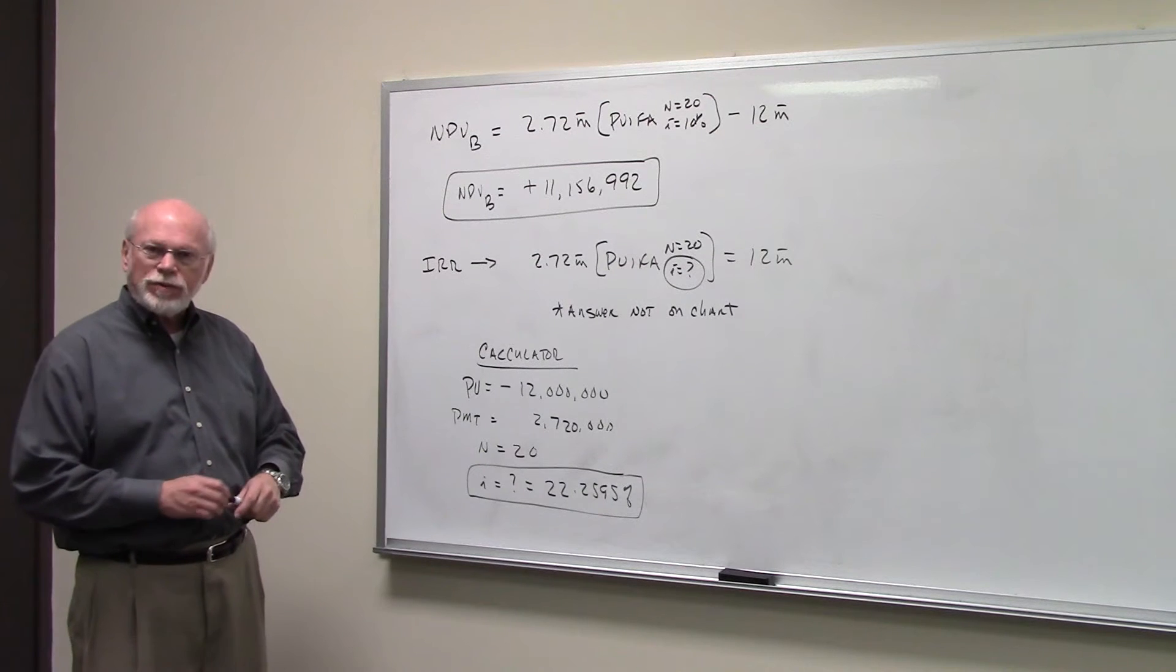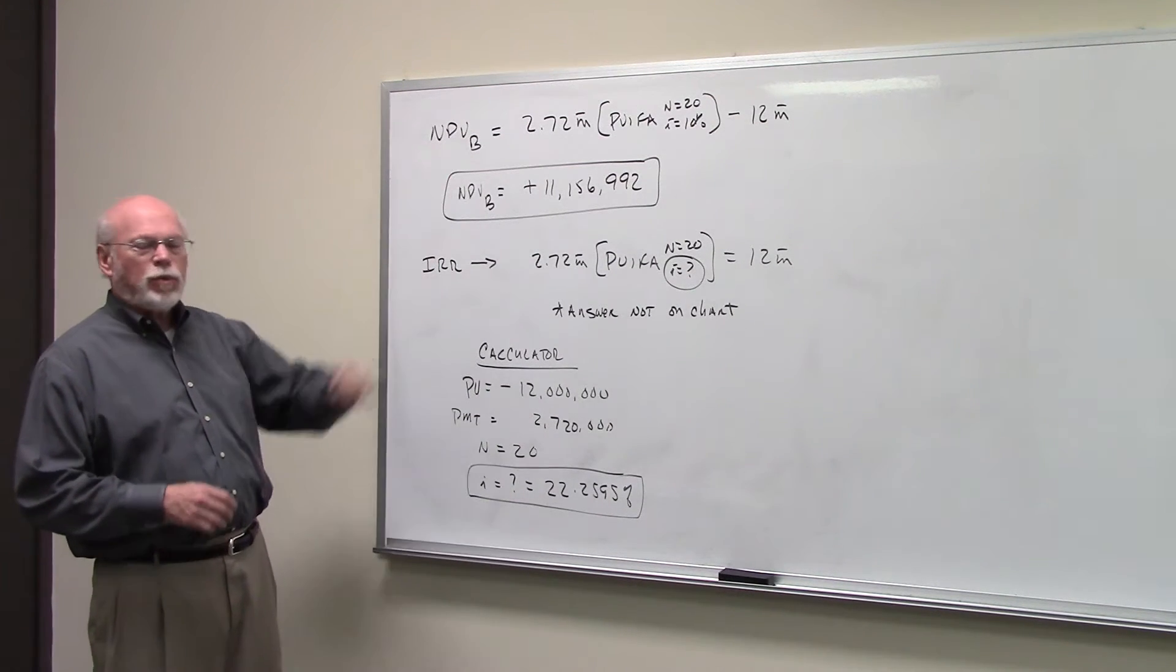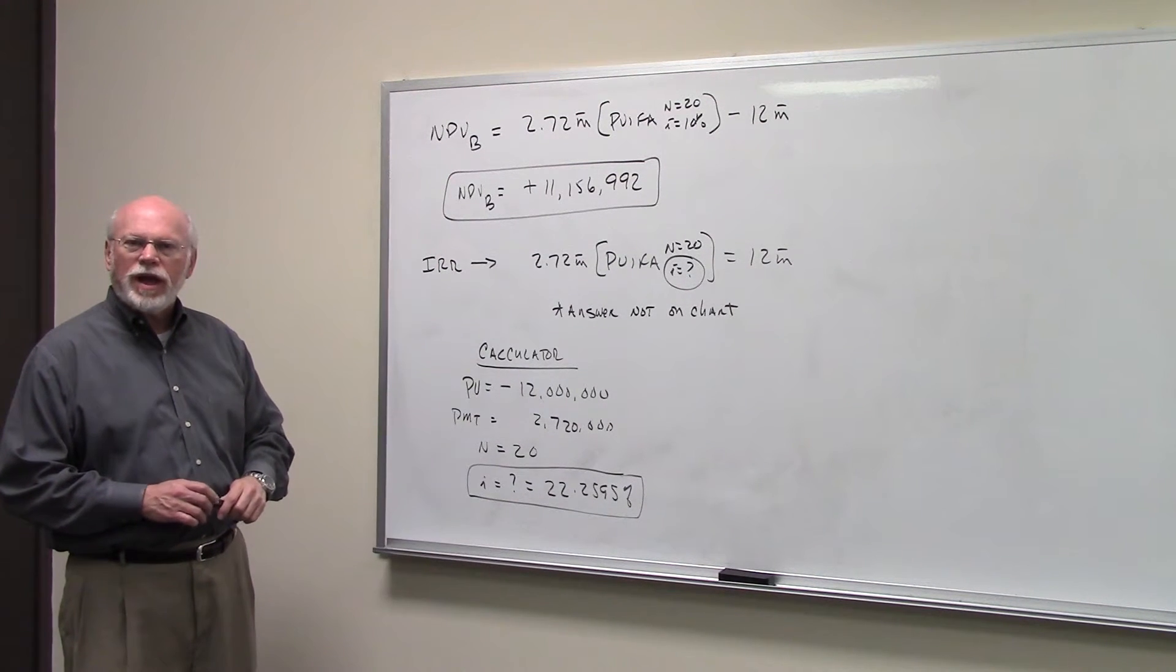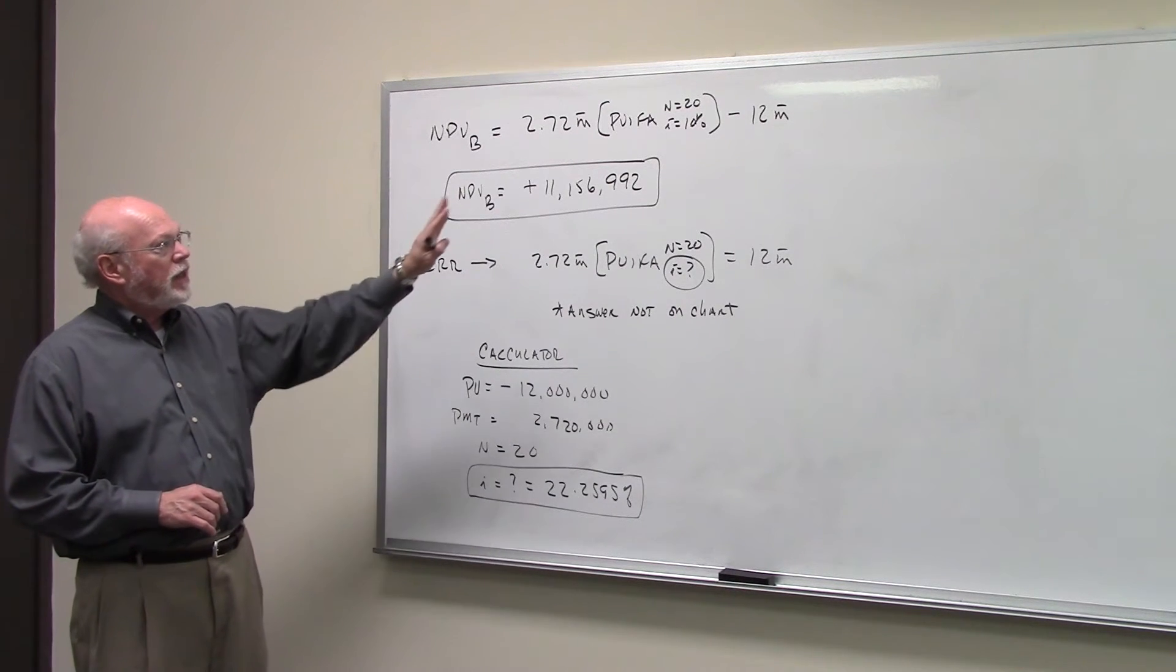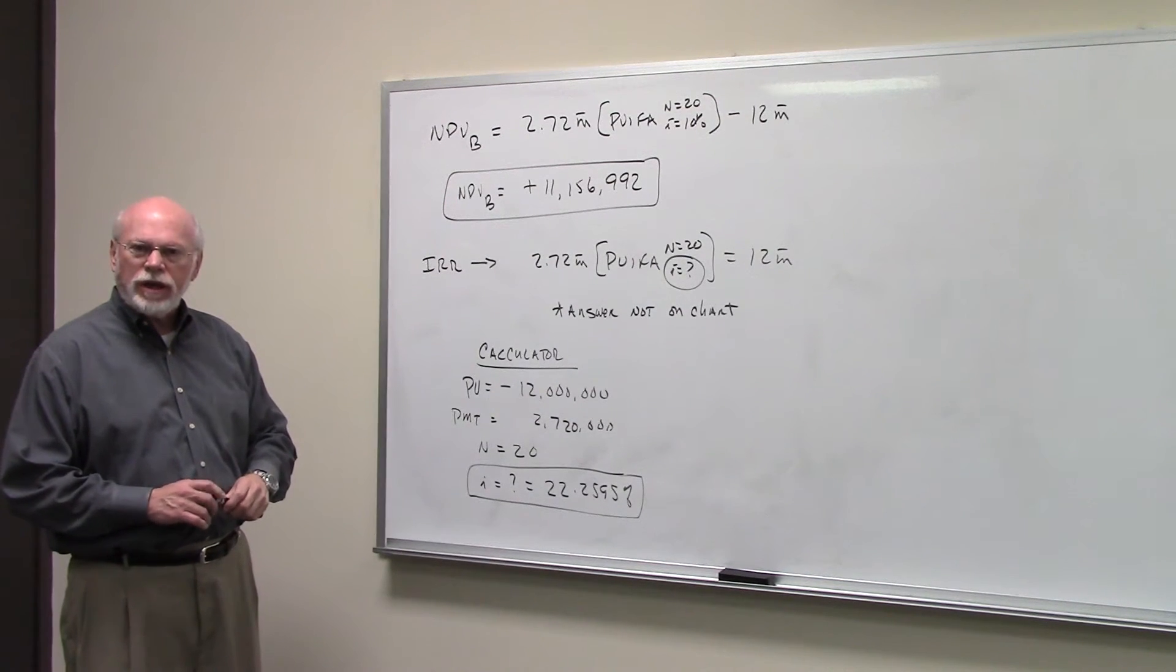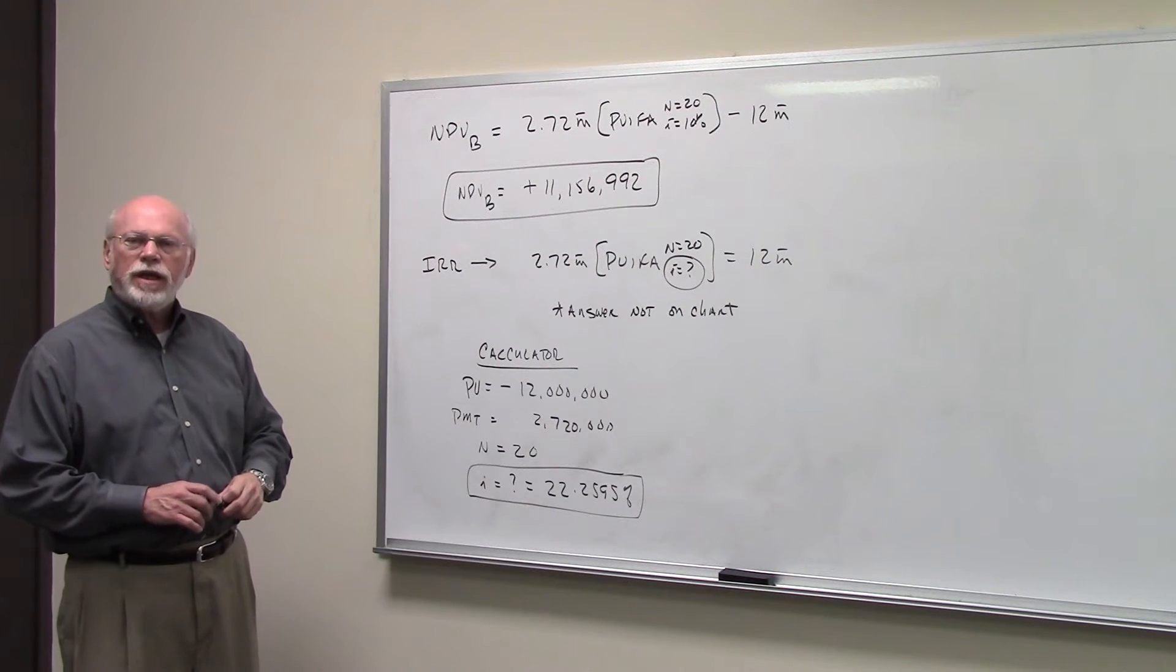We're going to compare that to this project. Now, this project promises $2.72 million a year in cash flow every year for 20 years. The cost of capital is 10%, and the cost of the project is $12 million.